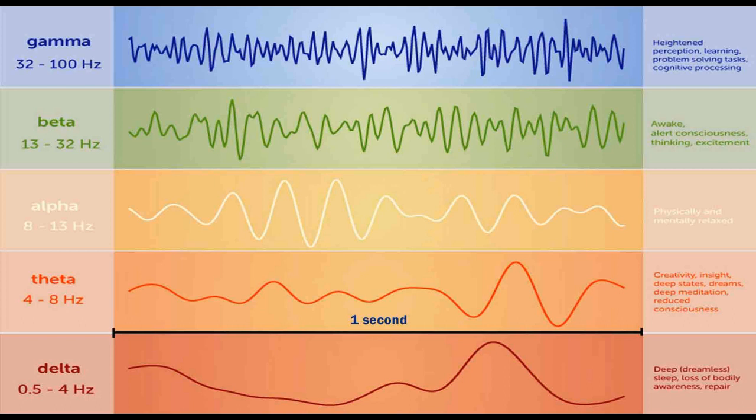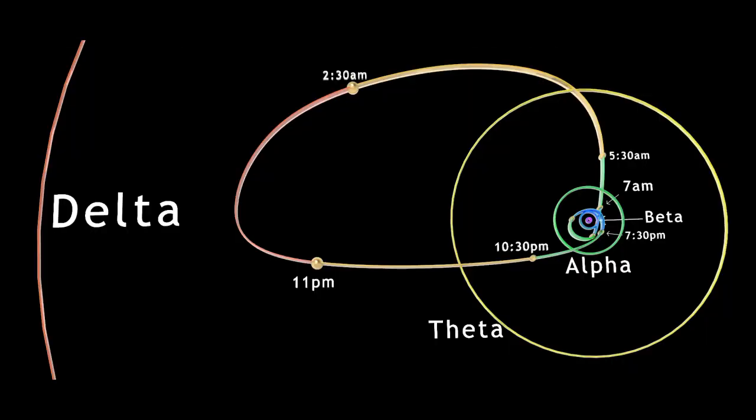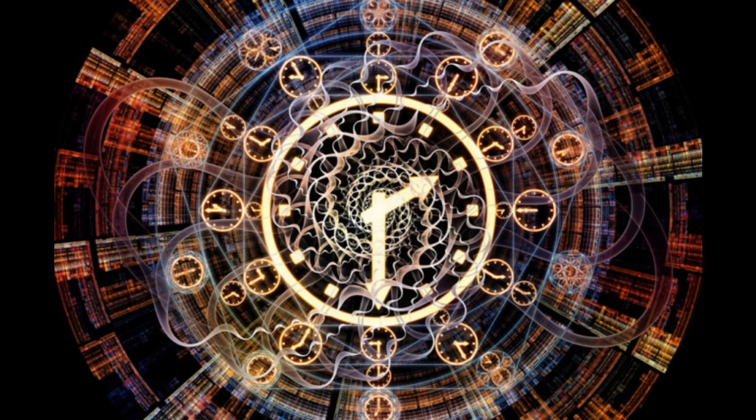From approximately 11:30 PM to 2:30 AM, our primary conscious harmonic is the delta wave. From 2:30 AM to about 5:30 AM, we are in theta waves. Then from 5:30 AM to 7 AM, we are in alpha waves. Throughout the day, from 7 AM to 7:30 PM, we flux from beta to alpha, but are primarily in beta.